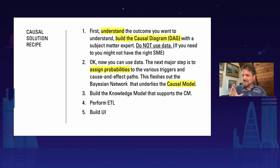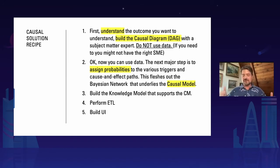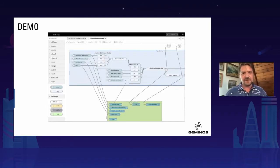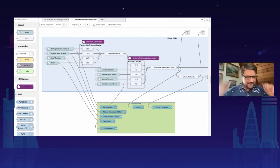A lot of causal science involves building models — Bayesian models, using an LSDM to understand things, or using SHAP values to understand what's going on within attributes. You build your model and assign probabilities to it, build the underlying knowledge model that supports the causal model, do your ETL, build a UI, and deliver this to a customer. We want to enable companies to go through this process using a tool to build these types of solutions. So let me show you what this looks like — I'm going to jump into the demo.